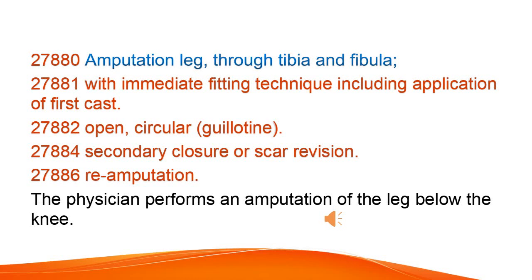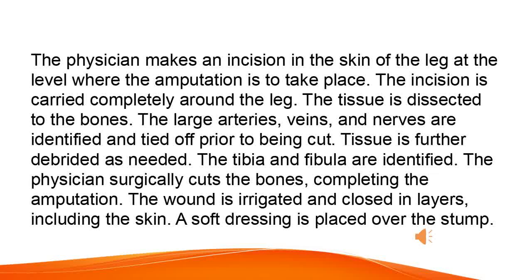Amputation of the leg through the tibia and fibula — with immediate fitting technique including application of first cast, open circular guillotine, secondary closure or scar revision, and re-amputation. The physician performs an amputation of the leg below the knee. An incision is made in the skin at the level where the amputation is to take place, carried completely around the leg. The tissue is dissected to the bones. The large arteries, veins, and nerves are identified and tied off prior to being cut. Tissue is further debrided as needed. The tibia and fibula are identified and surgically cut, completing the amputation. The wound is irrigated and closed in layers, including the skin. A soft dressing is placed over the stump.